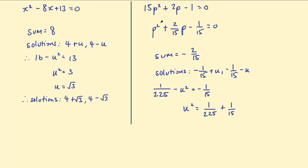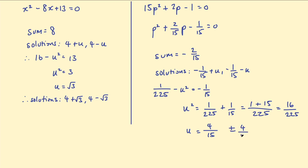Note: when finding the sum you take the negative of the coefficient, but for the product you just use the constant term as-is. Rearranging: u² = 1/225 + 1/15. To get a common denominator, multiply 1/15 by 15/15 to get 15/225. So u² = 16/225, and u = 4/15. We don't need a plus-or-minus here — using either sign gives the same two solutions.